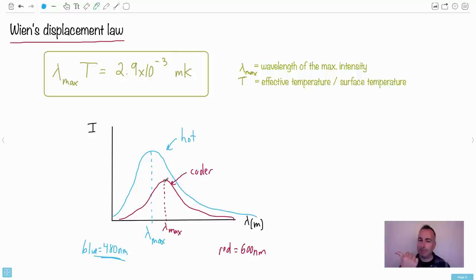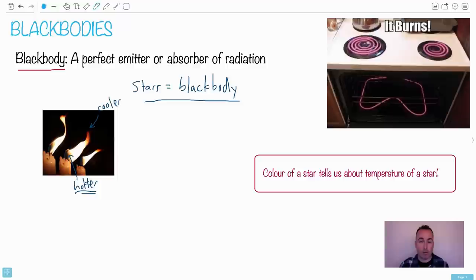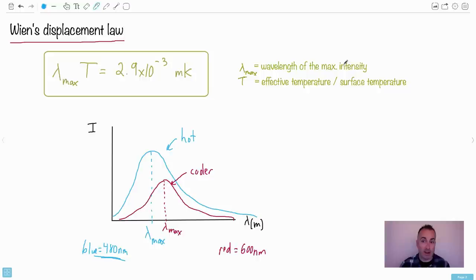As you get cooler, do you notice the intensity goes down? But also the peak wavelength changes. This is where this equation comes in. If you can know the peak wavelength, so the wavelength where the peak intensity happens, you can then define a temperature for it. Lambda max is going to be the wavelength of the maximum intensity. Wavelength is measured in meters.